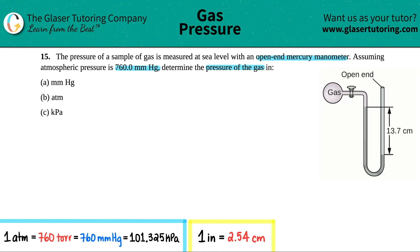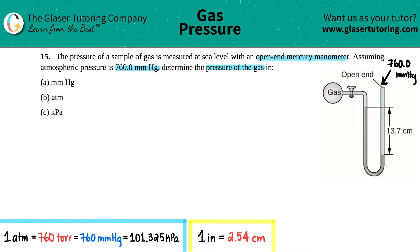There are two different types of manometers: open-ended and closed-ended. In this case we're dealing with an open-ended manometer, which means one end is open to the atmosphere. The atmospheric pressure interacting with this manometer is 760.0 millimeters of mercury. We need to find the actual pressure of the gas using the height difference of the mercury level.